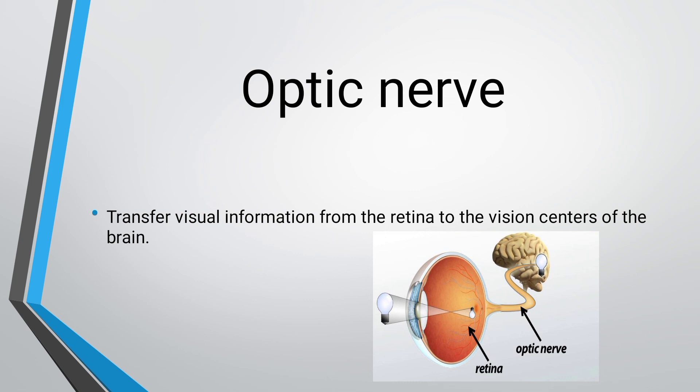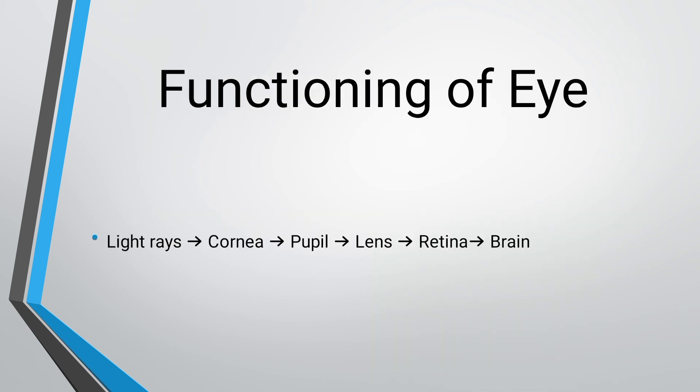In summary, the functioning of the eye is: light rays enter through the cornea, then pass into the pupil — which is the hole in the center of the iris — then through the lens, which directs the light onto the retina. The optic nerves then send the visual information to the brain.